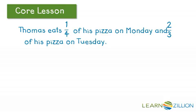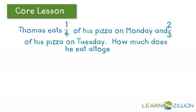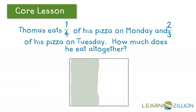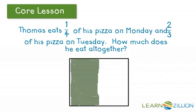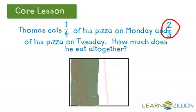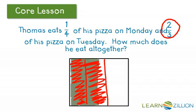Thomas eats one fourth of his pizza on Monday and two thirds of his pizza on Tuesday. How much does he eat altogether? If we use the benchmark of one half and look at the fractions given, we just want to predict: will our answer be more than one half or less than one half? One thing I notice is that I'm going to look for my larger fraction. My largest fraction here is two thirds, and two thirds is already a little more than one half.